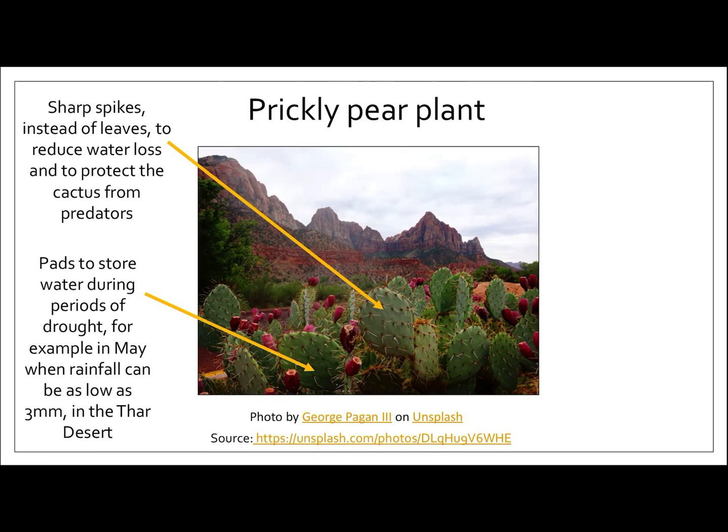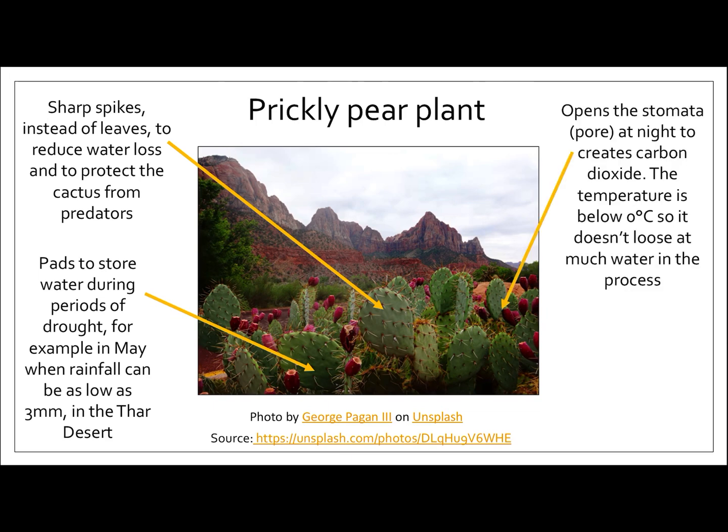The prickly pear also has pads to store water during periods of drought. In May, the rainfall can be as low as three millimetres in the Thar desert. So it's really important that when it does rain, the cactus can collect the water, store it, and then use it during periods of drought or very dry weather so that it can help the plant to survive.